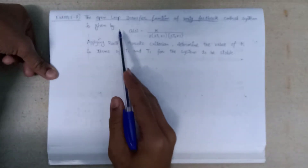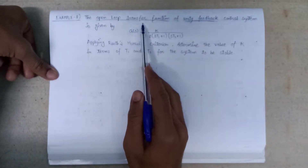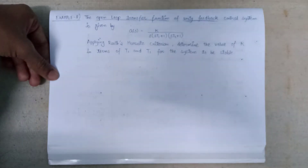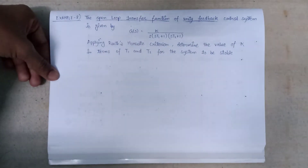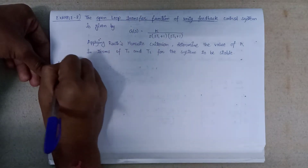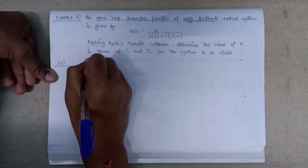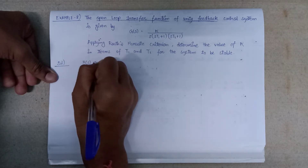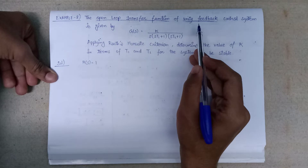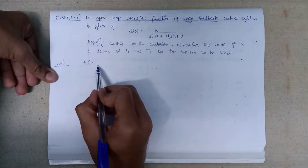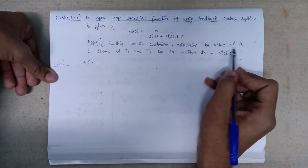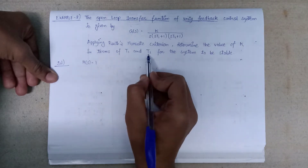In this question, we are given the open loop transfer function G(s), and it is also stated that unity feedback is there, that is H(s) equals 1, since it is a unity feedback control system. We need to find out the value of k in terms of T1 and T2.